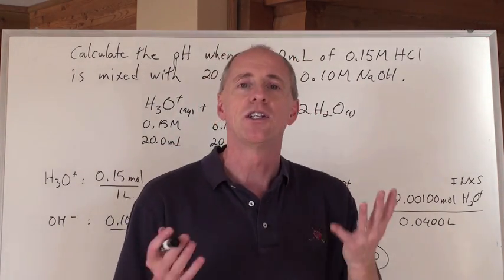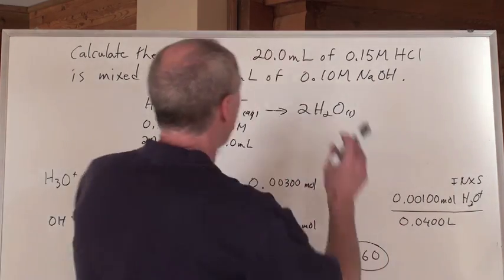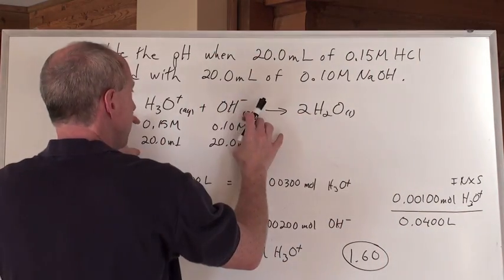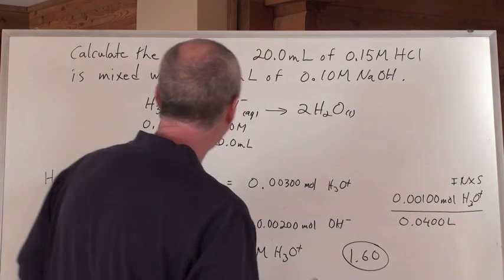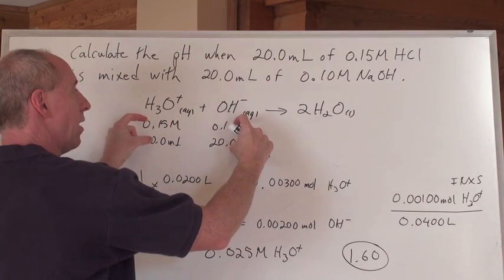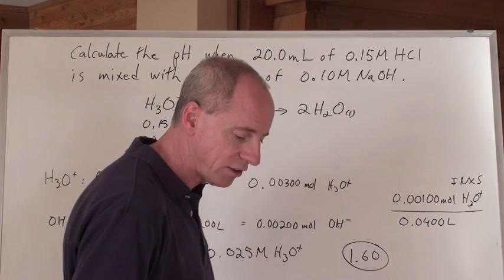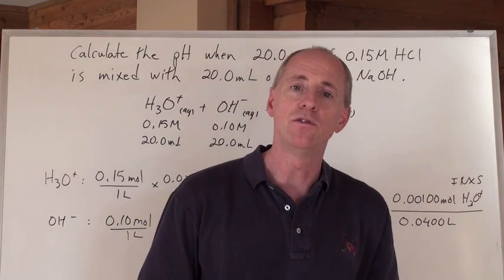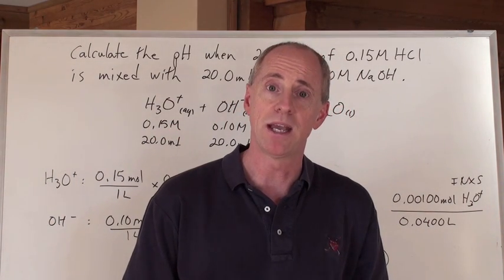So here's the deal. Just make sure that you write down all the information underneath the compounds to which they pertain, and then if you've got a mixture of two moles that you can calculate here, find out who's in excess, and that one divided by the new volume will help you find that unknown concentration in pH.